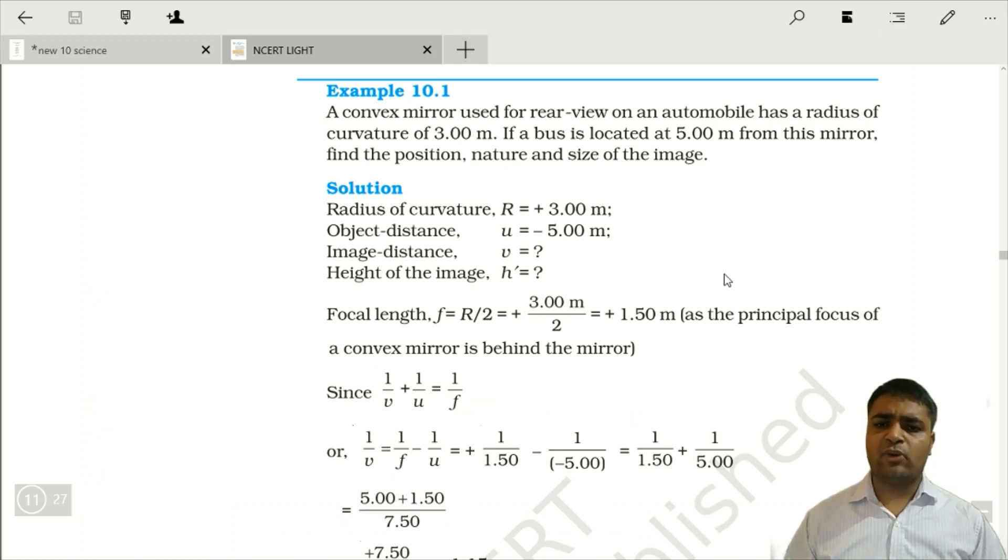Next, in this lecture, we are going to see some examples of NCERT. Example number 10.1. Isko dekhiye. A convex mirror used for rear view on an automobile has a radius of curvature 3.00 meter. Clear? A bus is located at 5.0 meter from the mirror. Find the position, nature and the size of the image. Hume position batana hai, nature batana hai, or size batana hai.